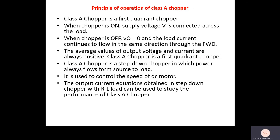When the chopper is off, V0 equals zero, so the load current continues to flow in the same direction through the freewheeling diode. The average value of output voltage and current are always positive. Class A chopper is the positive quadrant chopper and is a step-down chopper in which power always flows from source to load.